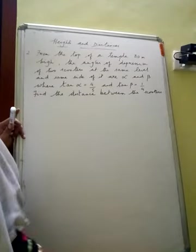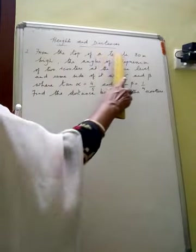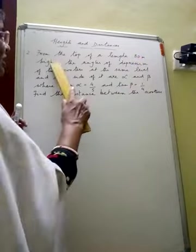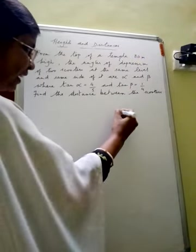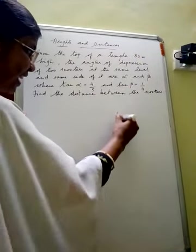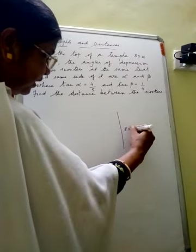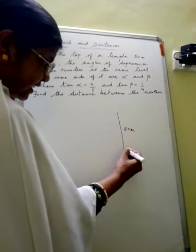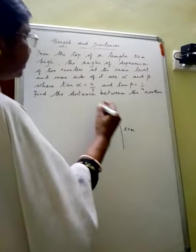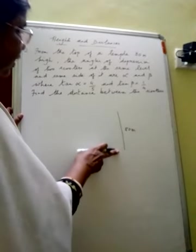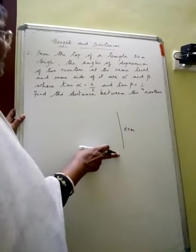Now see question number 2. From the top of a temple 80 meters high — so we are denoting a temple 80 meters high — this is the temple, this is the tip of the temple, this is the top part, foot of the temple and top part of the temple, that is 80 meters high.